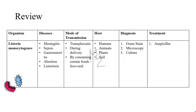Alright, let's review everything in this short table. The organism discussed today is Listeria monocytogenes. It is responsible for causing listeriosis, meningitis, sepsis, gastroenteritis, spontaneous abortion, and bacteremia. It is transmitted transplacentally, during delivery, by consuming certain foods, and feco-orally. Its hosts are humans and the main reservoirs are animals, plants, and soil, from which bacteria are transmitted to humans. Diagnosis is primarily based on gram staining, microscopy, and culture. Treatment is done with ampicillin — given with or without gentamicin — or trimethoprim-sulfamethoxazole if needed.